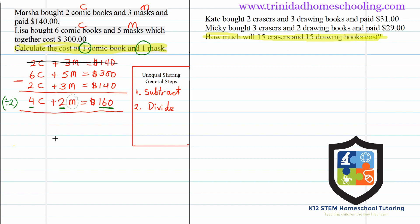By dividing everything by 2 we get one mask remaining, which is what we want to find. So: 4 ÷ 2, 2 ÷ 2, and 160 ÷ 2. This gives us: 2 comic books plus 1 mask equals 80 dollars.